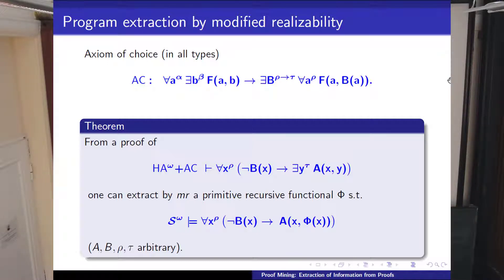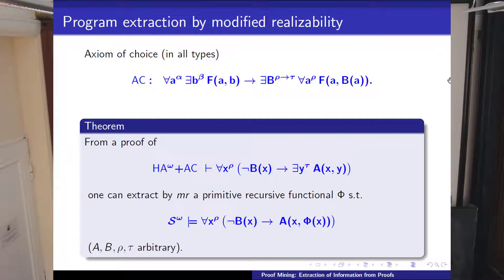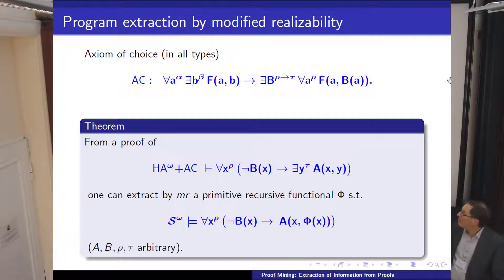We have intuitionistic arithmetic in all finite types, using full choice, and for for-all-exist statements, we can allow arbitrarily negated premises and extract a program doing this. This seems to be a very nice result, but unfortunately it only holds for intuitionistic systems. There is a device, again due to Gödel—the so-called negative translation—to translate classical systems into intuitionistic ones. Using the negative translation, one can show that if you have a classical proof of a for-all-exist statement with a quantifier-free matrix, one can prove it intuitionistically.